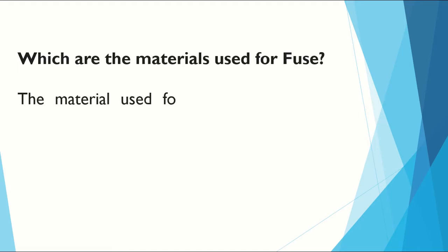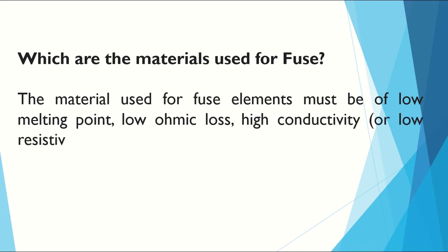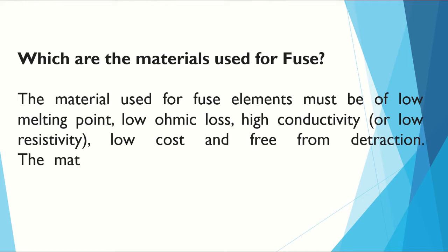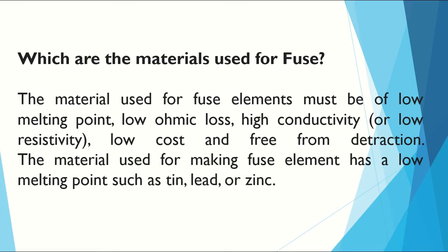The material used for fuse elements must be of low melting point, low ohmic losses, and high conductivity or low resistivity, low cost and free from deterioration. The material used for making fuse elements includes tin, lead, or zinc — all having a low melting point, very low resistivity and high conductivity.